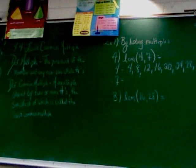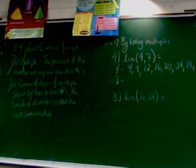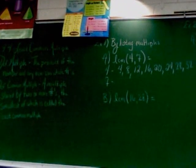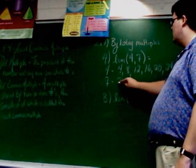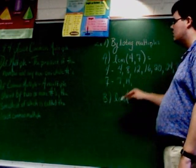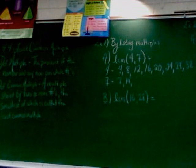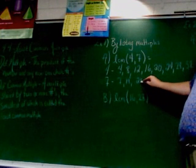We've got to do the same thing for the number 7. So I've got to go ahead and list the multiples of 7. Obviously, it starts with 7, then goes to 14. Pick it up from there for me, please. 21. Keep going. 28.